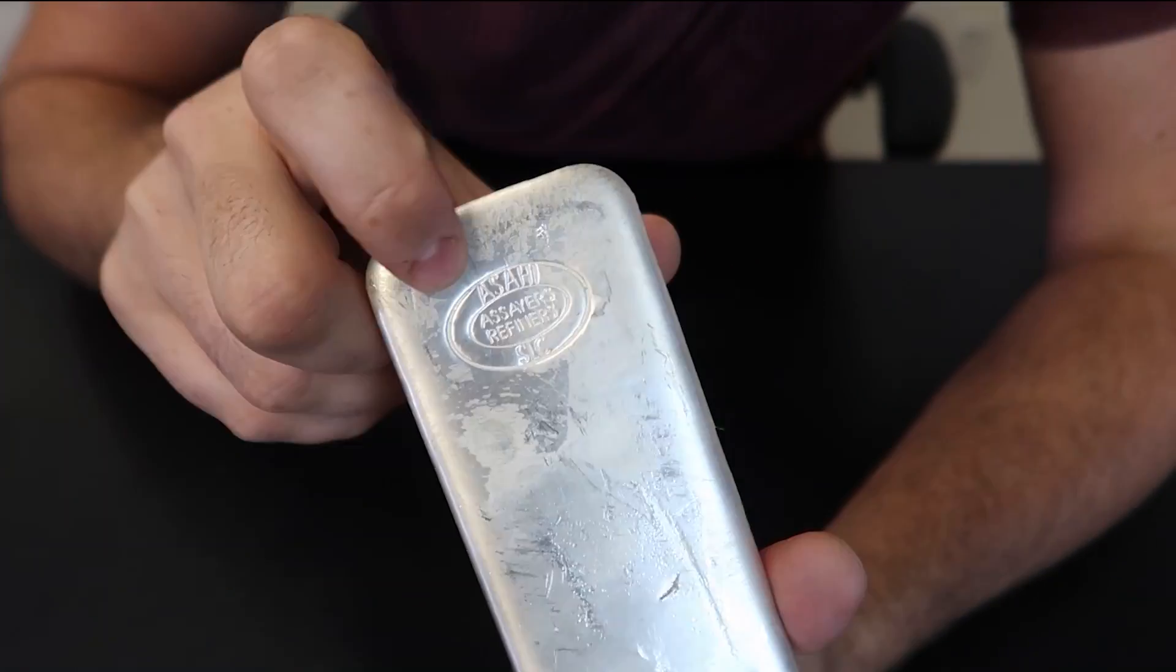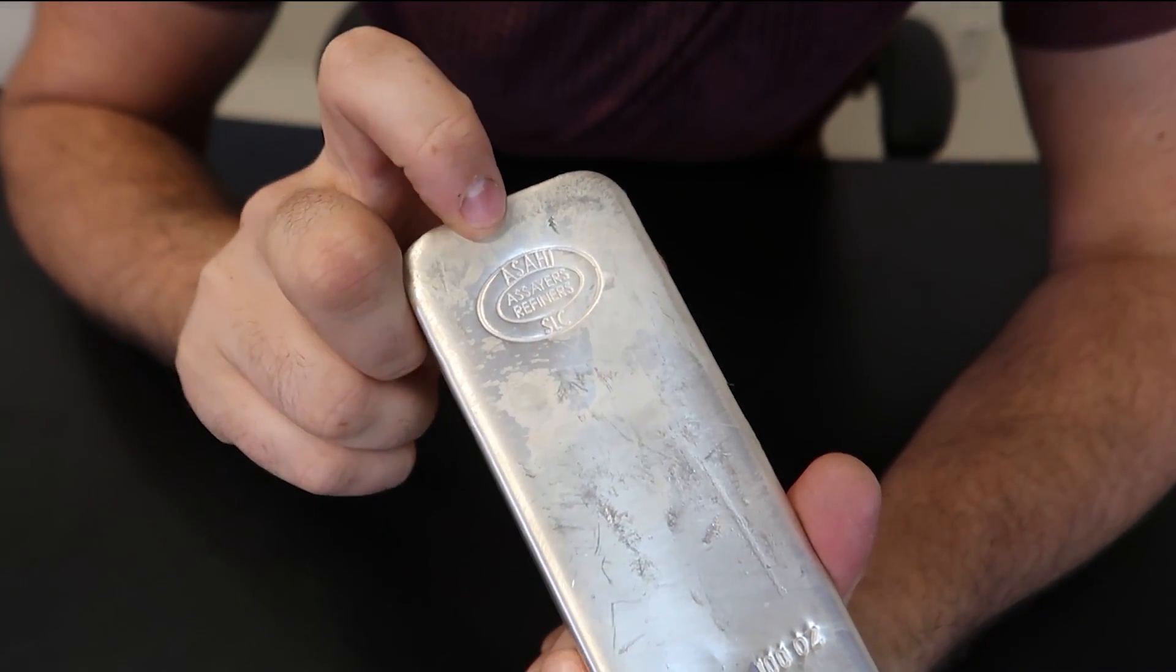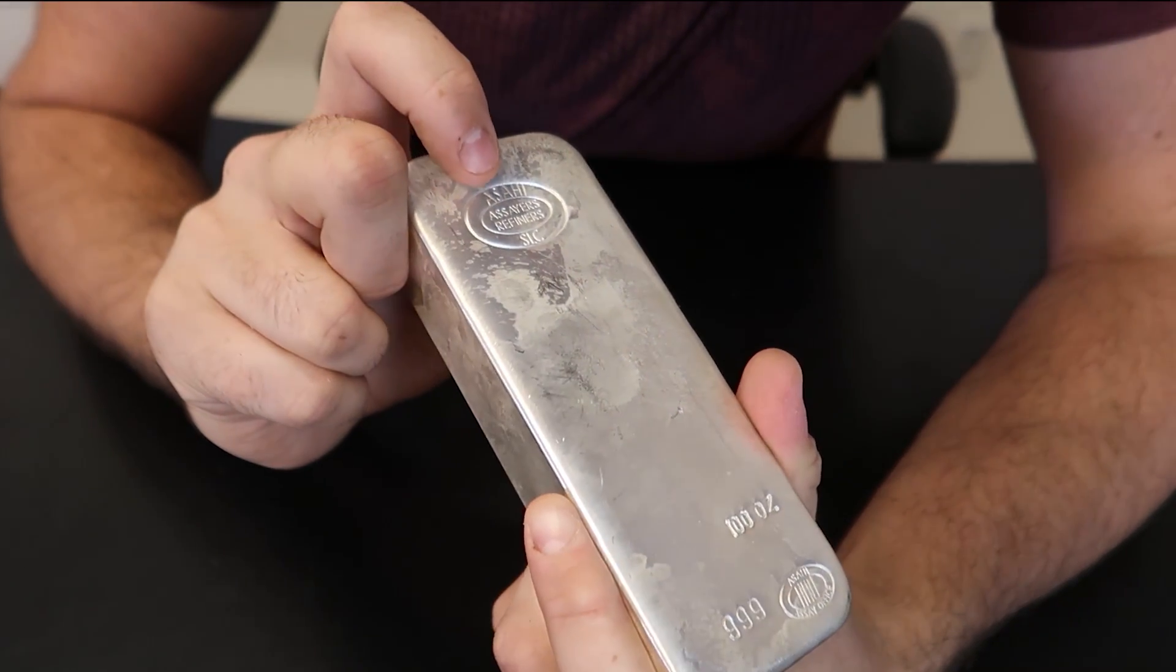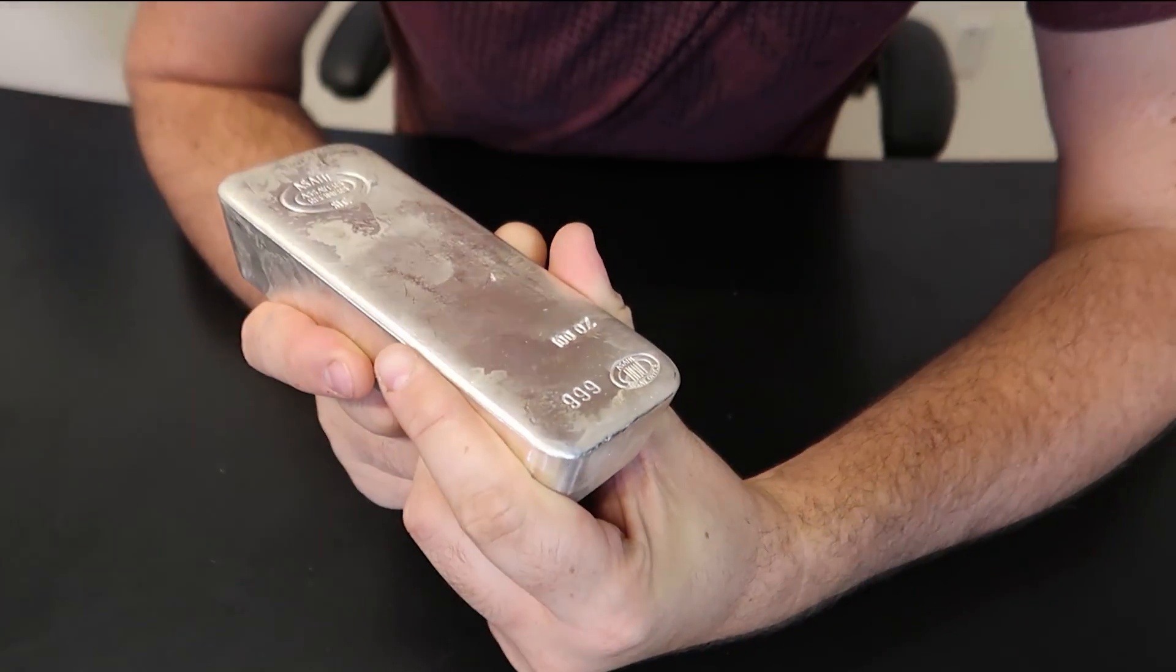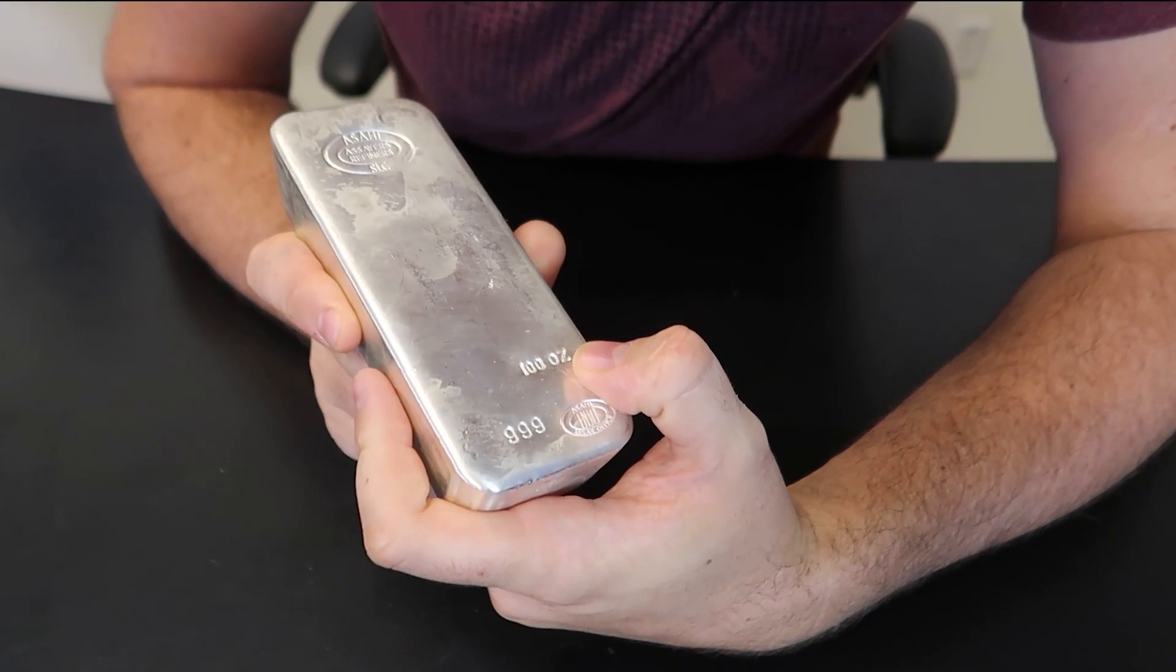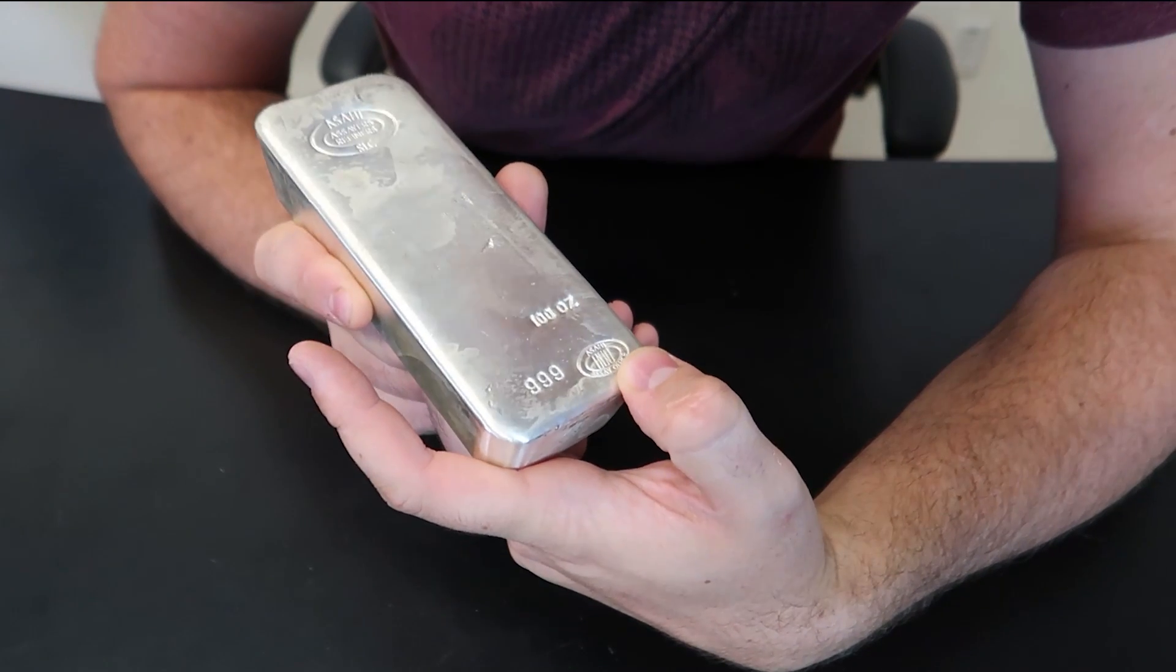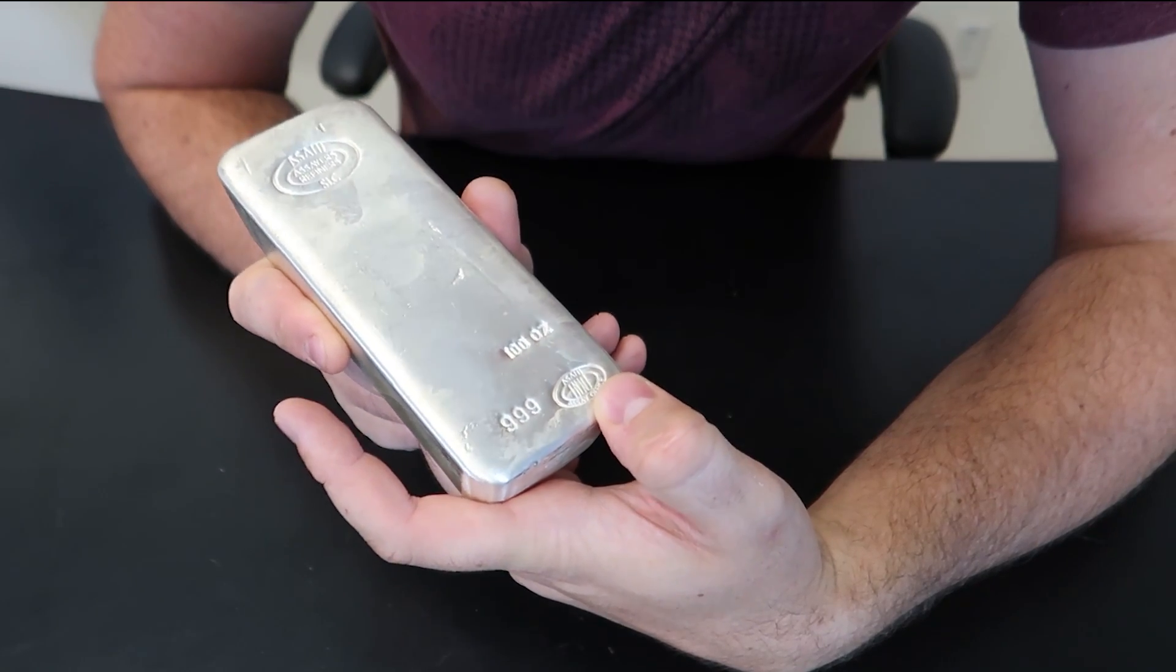So let's look at this close-up. There's the stamp: Asahi refiner SLC. And then there's a serial number, 39 silver bar, and then there's another stamp. That's kind of cool.